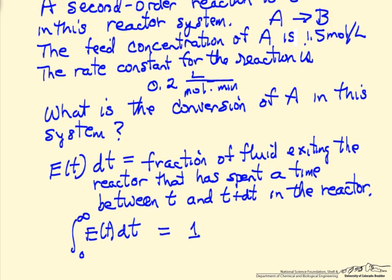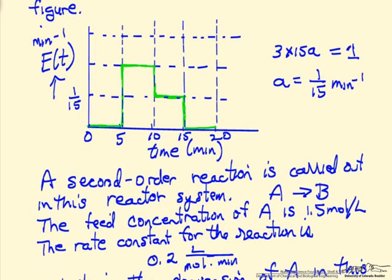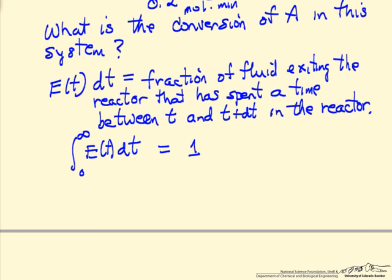Now we can use that residence time distribution along with the reaction rate information and segregated flow. What's meant by segregated flow is we can imagine packets moving through the reactor like little batch reactors flowing through — they spend different amounts of time, as indicated by the green plot. At the end, we collect all these packets to determine the average conversion.